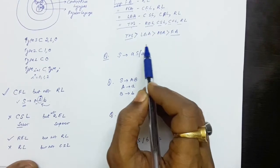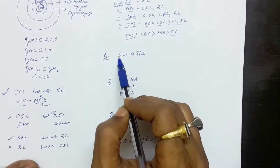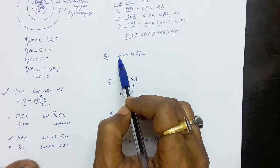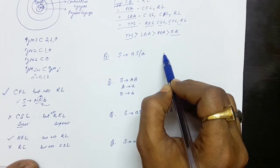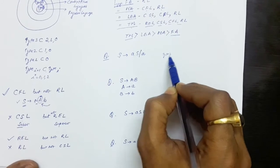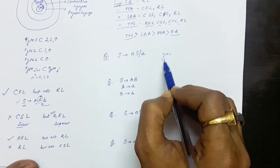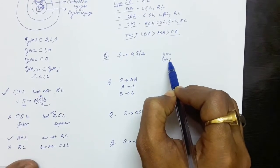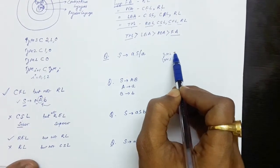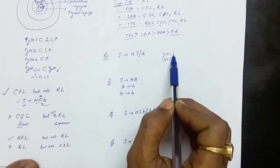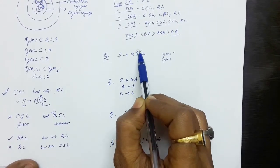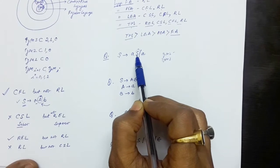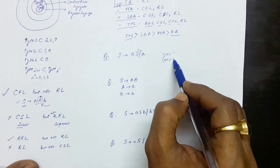There is only one non-terminal symbol and it is appearing on the right. On the left hand side we have only one symbol. So if we have only one symbol on the left hand side, there are two options: either it is Type 2, that is context free, or Type 3. Since the non-terminal is appearing on the right, this is right linear, so it is Type 3.